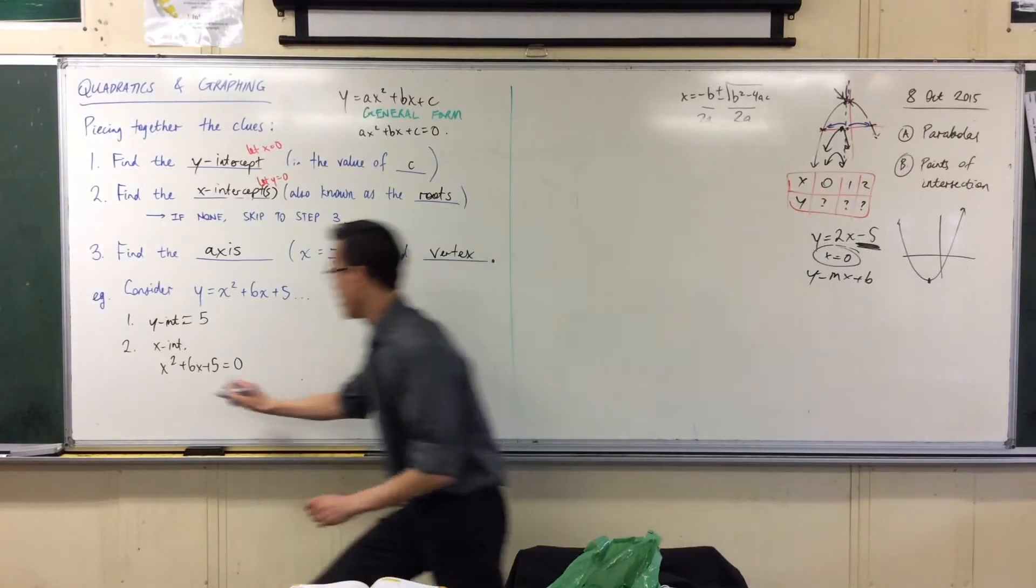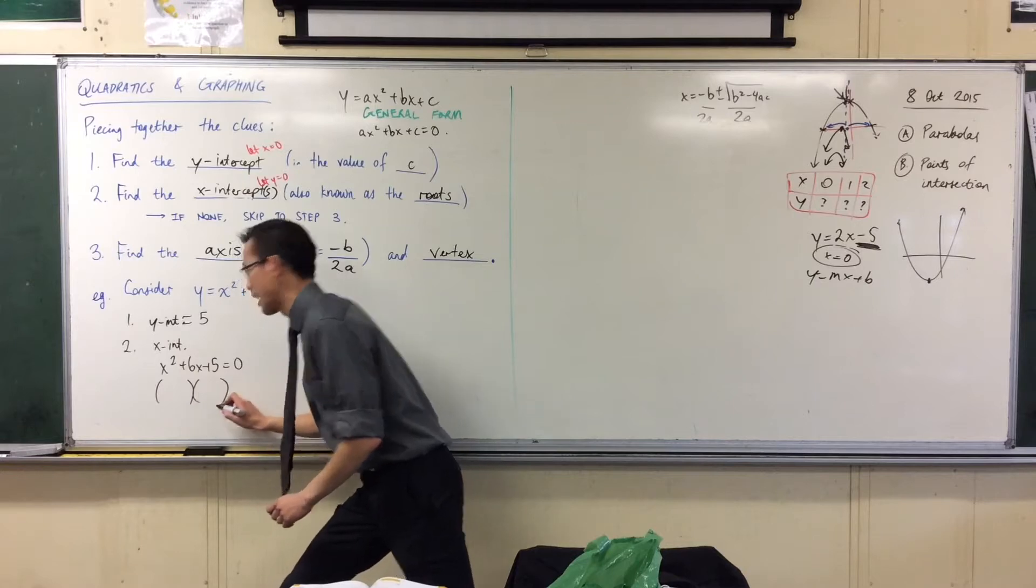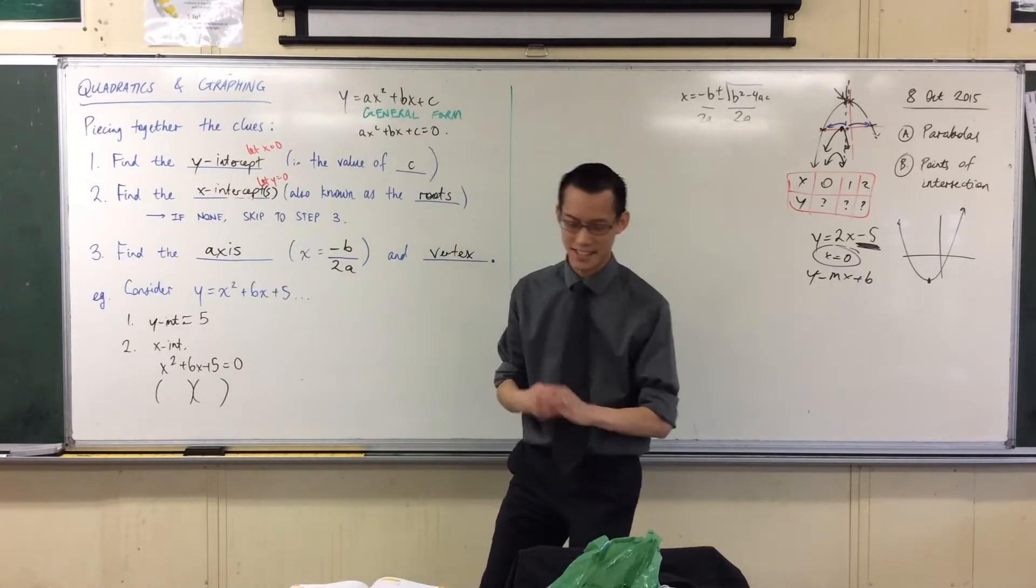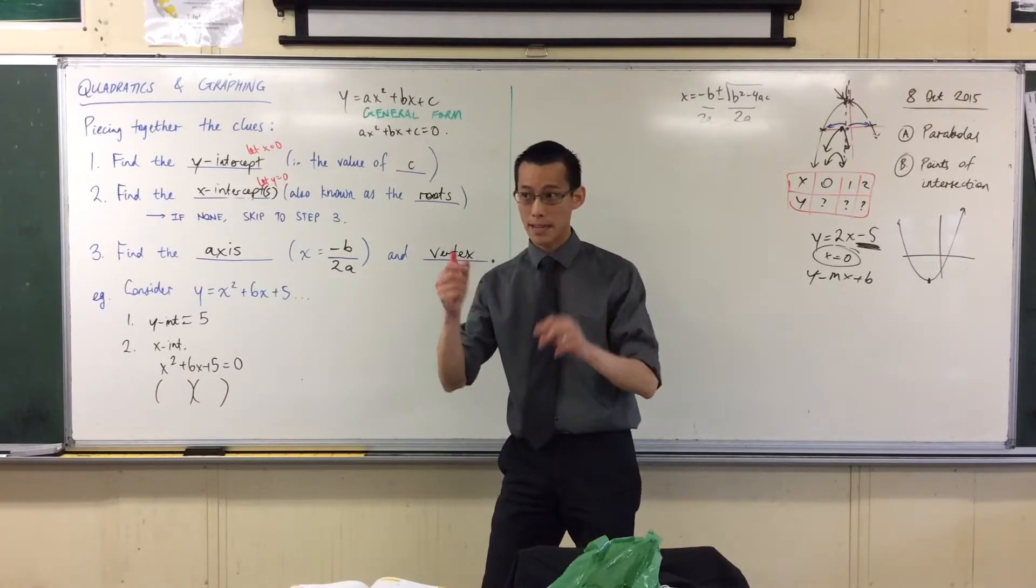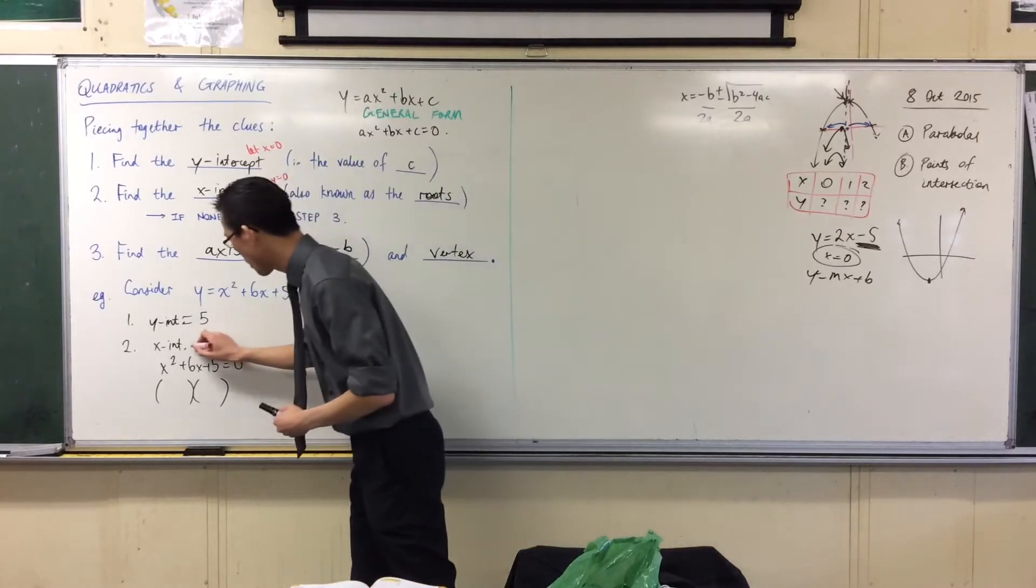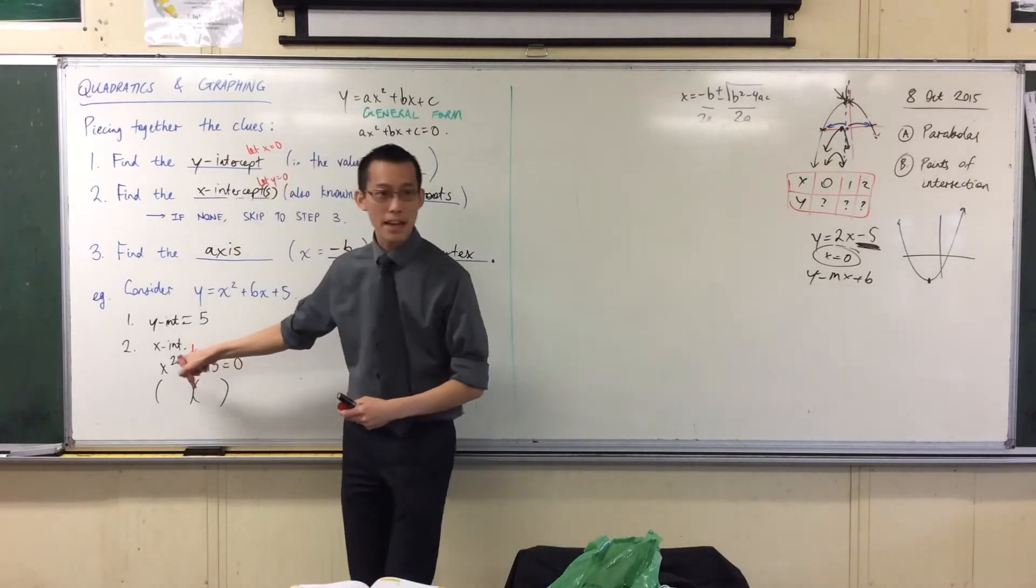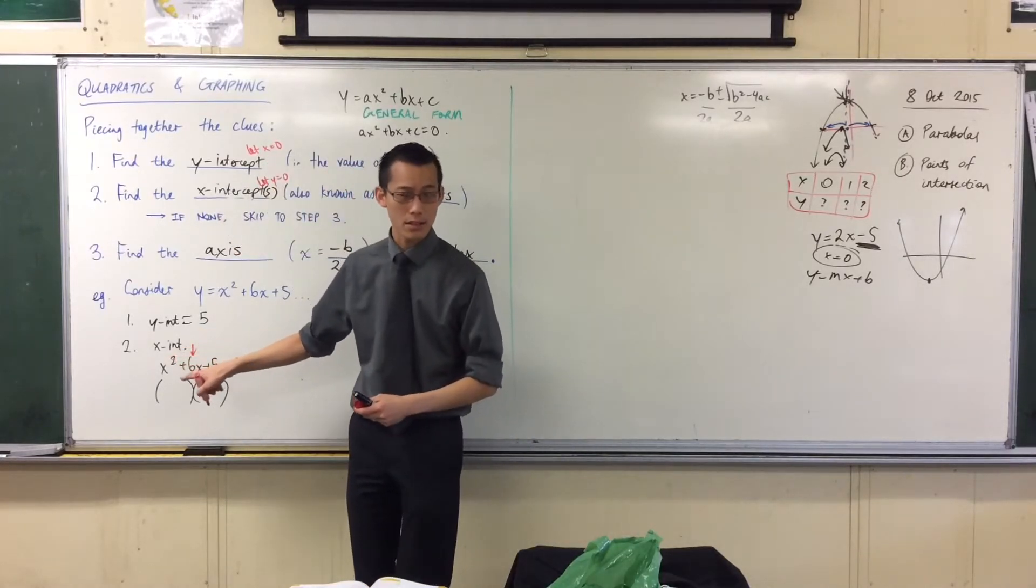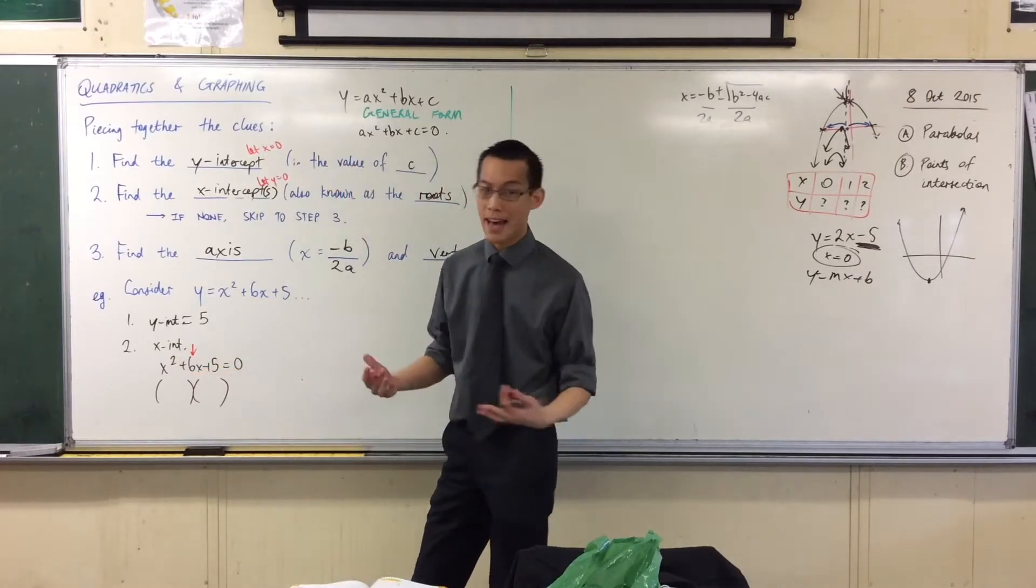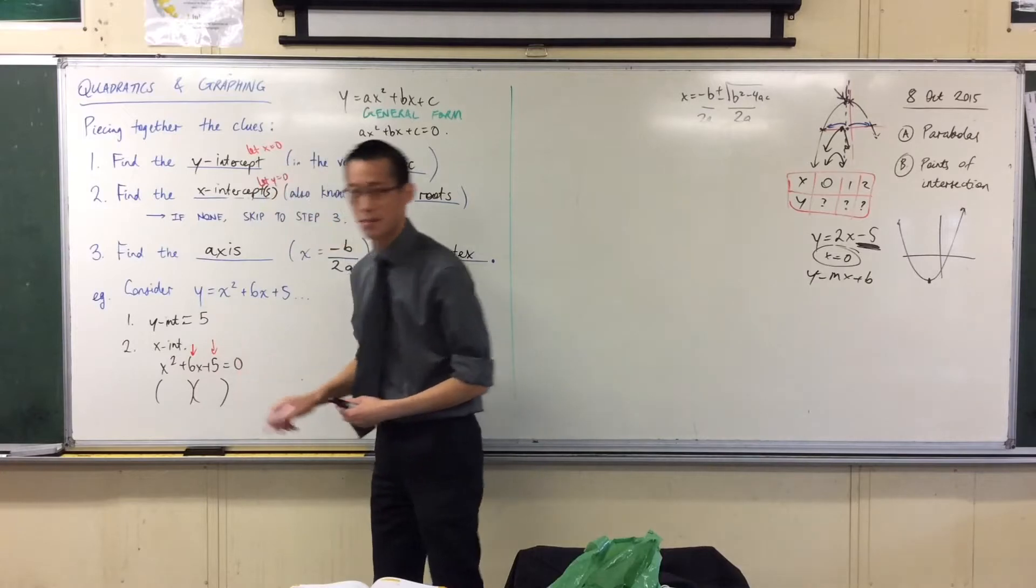x plus two, x plus three. Now think carefully. This is actually slightly sneaky. I'm looking for a pair of numbers that adds to something and multiplies to something. But which one's which? Do I want it to multiply to six or add to six?